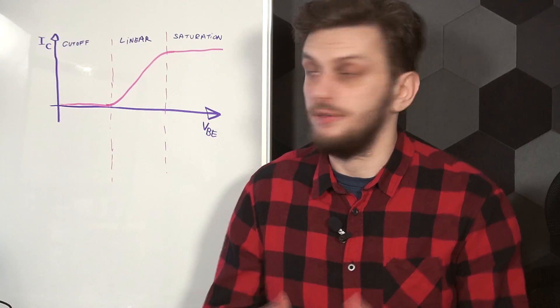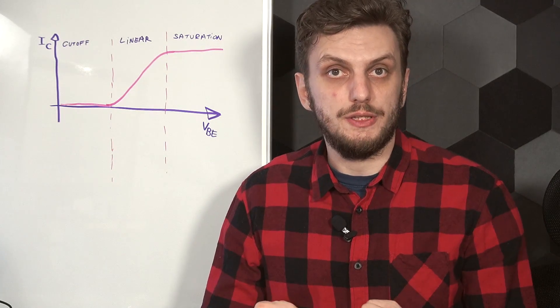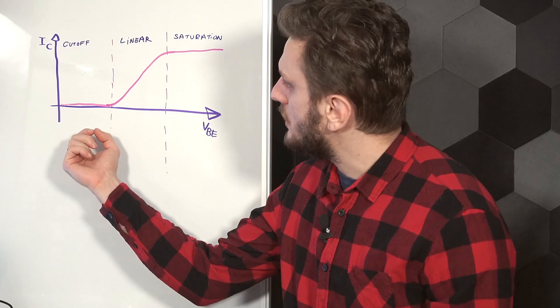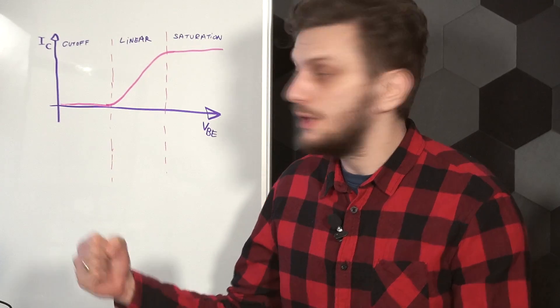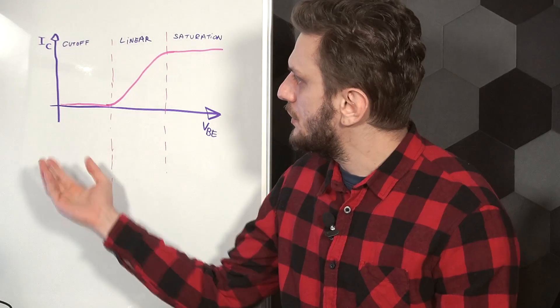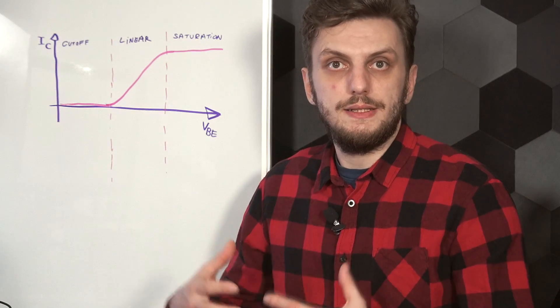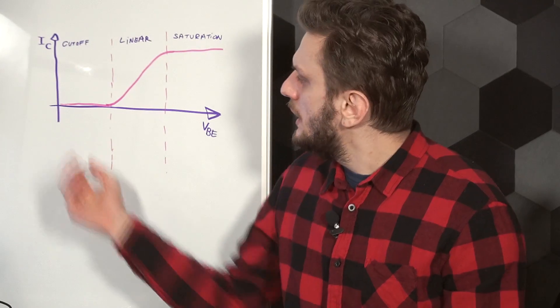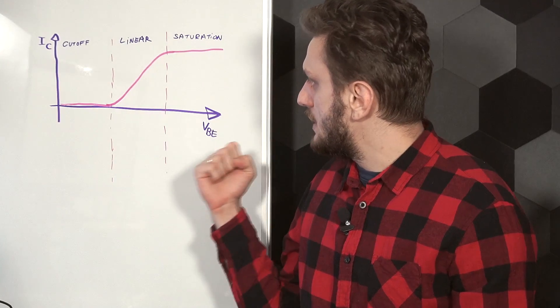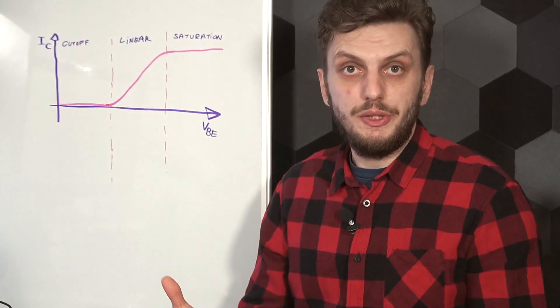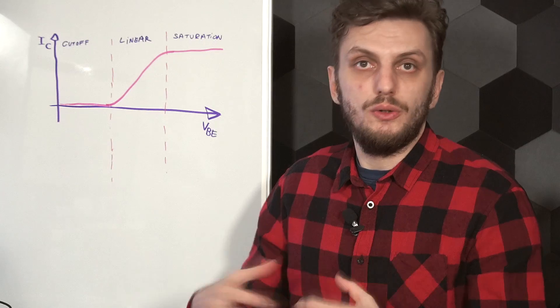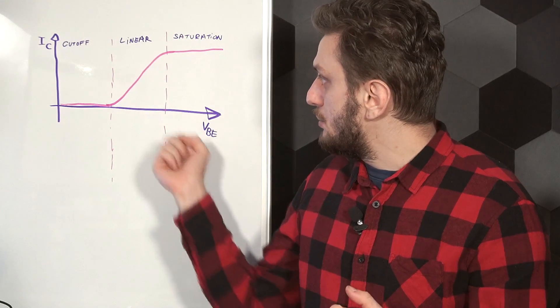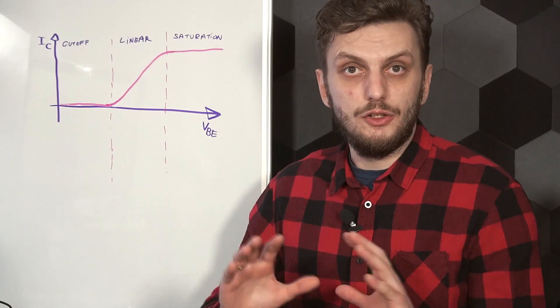In contrast, for Class B or C, where the conduction angle is lower, the input signal is partitioned and amplified in chunks. Now we can look at the generic graph of collector current versus base-emitter voltage for a bipolar transistor to see the various operating modes. At very small base-emitter voltages, there's not enough voltage to open the base-emitter junction, so there is absolutely no collector current. In this region, we can say that the transistor is off or in cutoff mode. Since there's no link between input signal and collector current, this is a highly non-linear area.